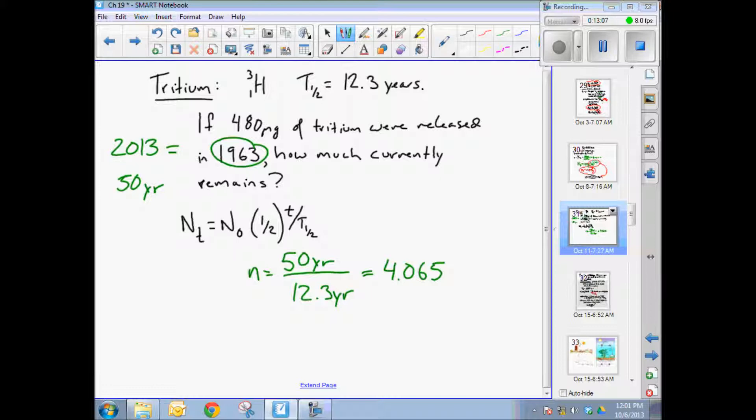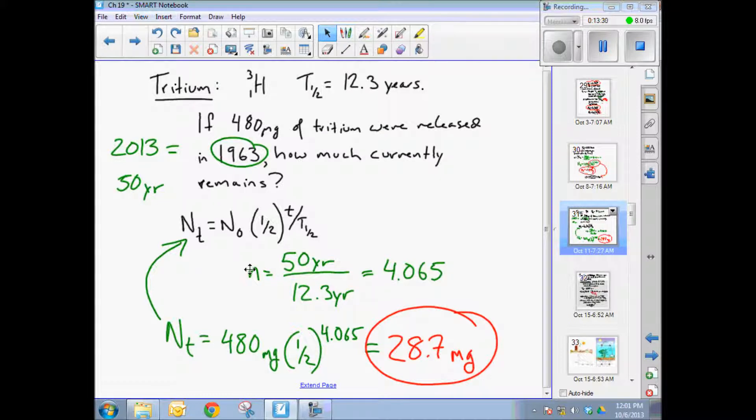And now we can plug and chug. N sub t using this formula is equal to the original amount, which was 480 milligrams times one half to the number of half lives, 4.065. And my answer comes out to be 28.7 milligrams existing about 50 years later, not a small amount, but I guess that's dispersed over the entire atmosphere on the planet. So it's really not a big amount when you consider dilution.